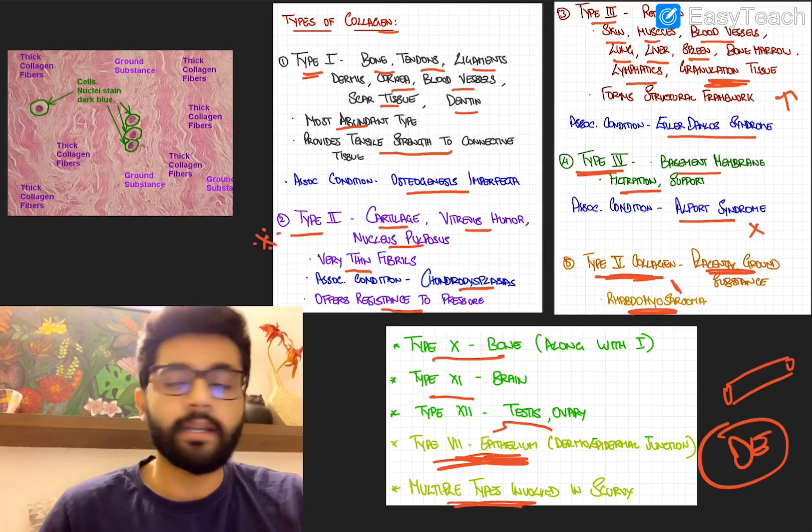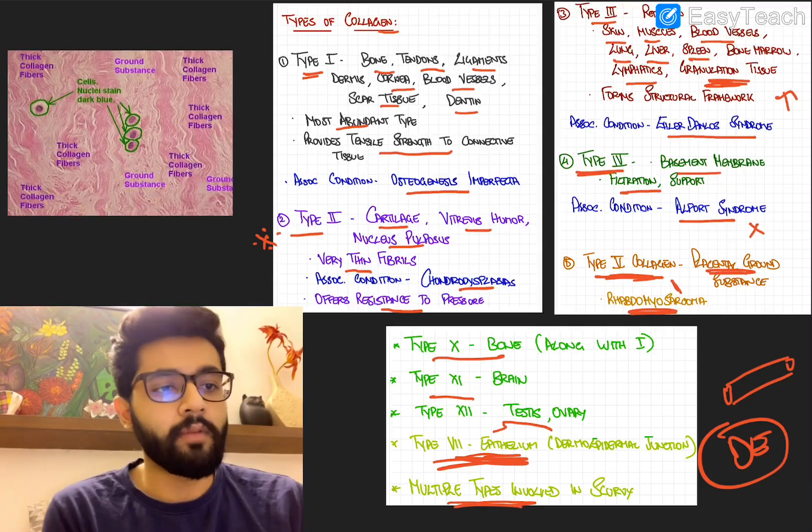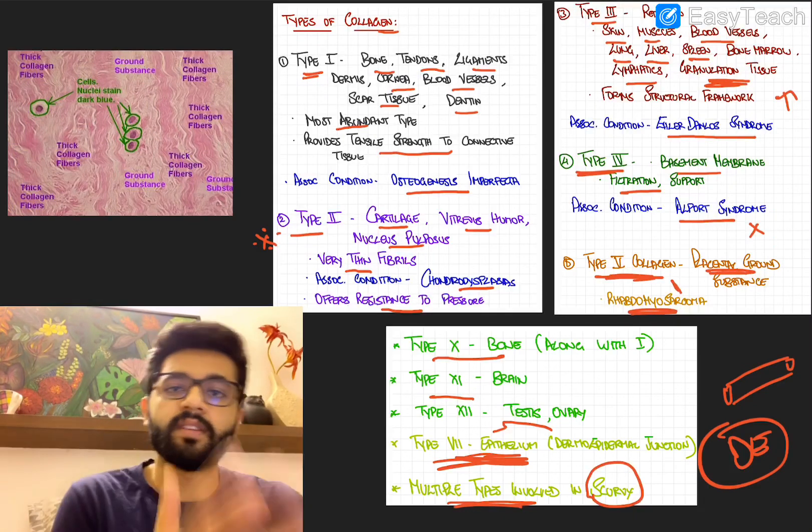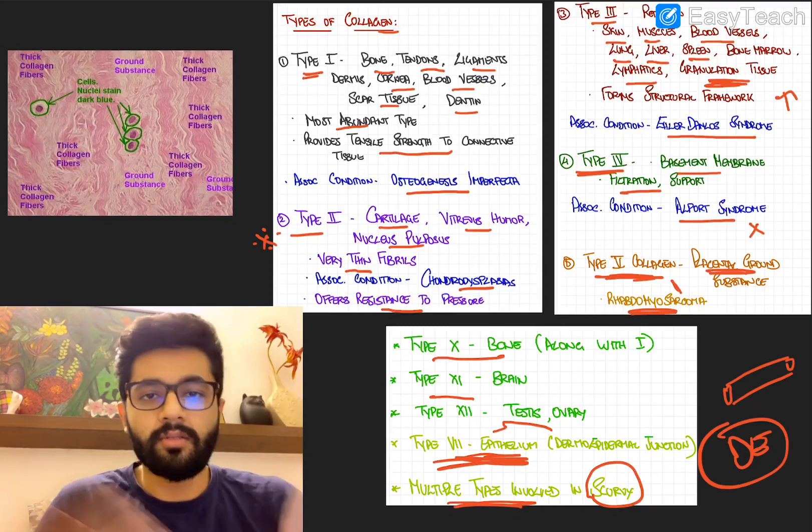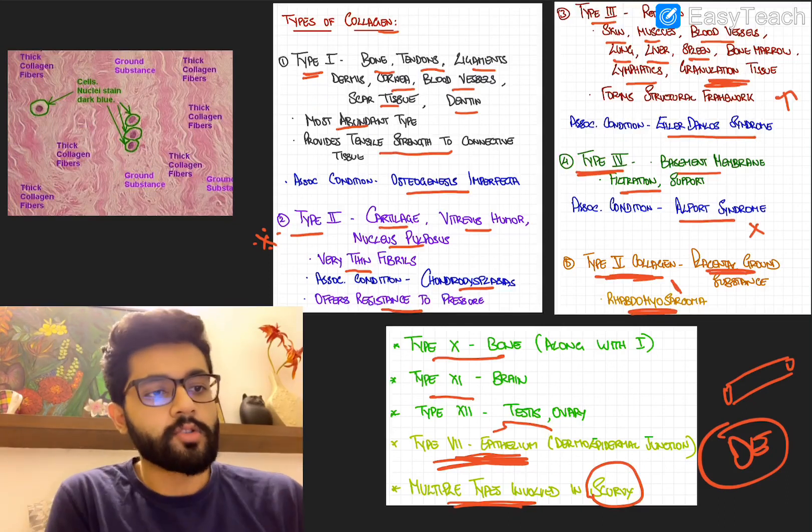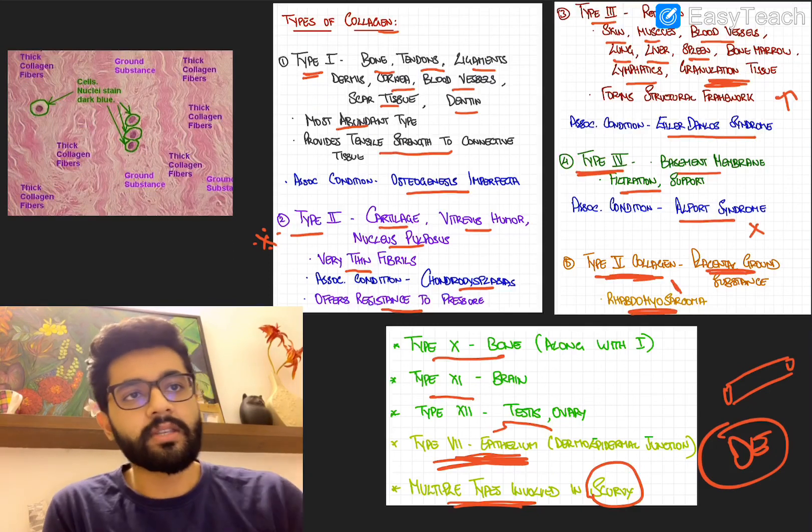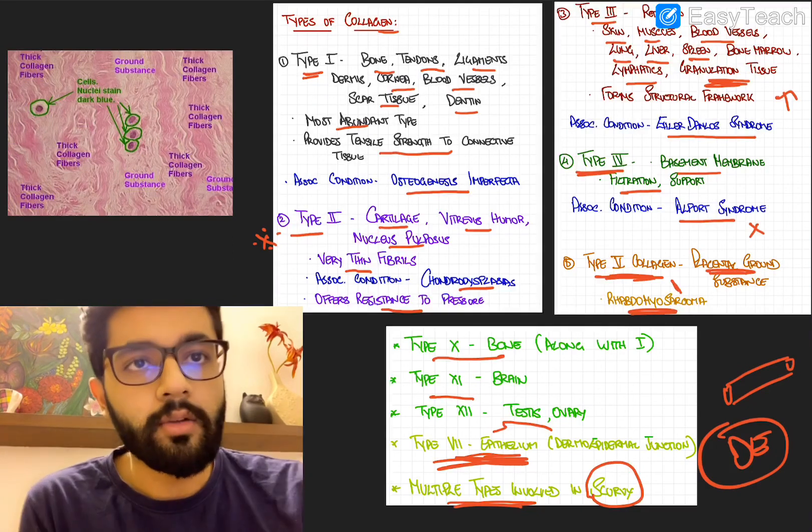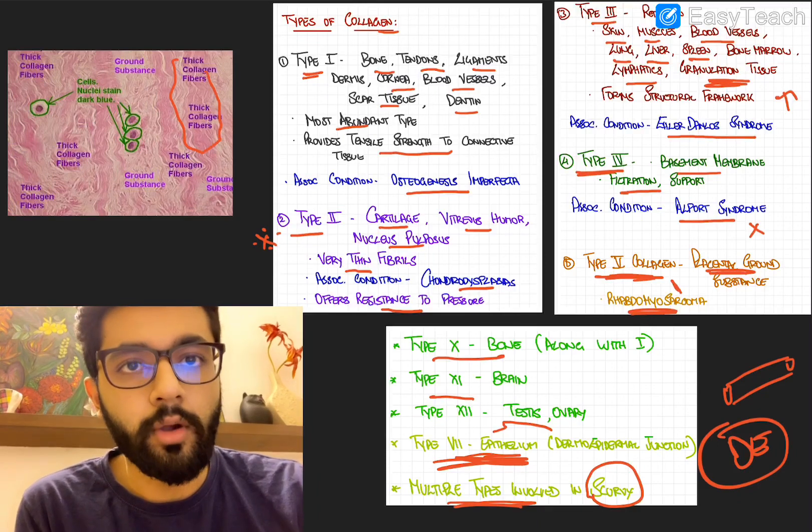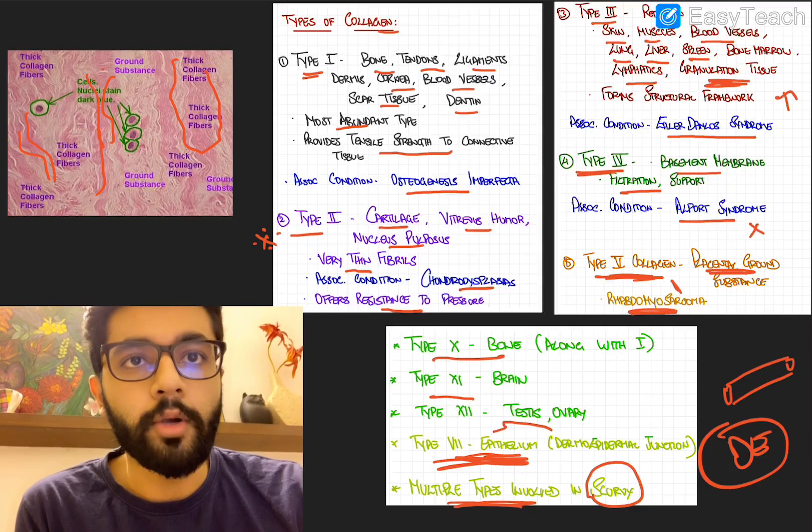If multiple types of collagen are involved, you should always suspect scurvy. So scurvy is vitamin C deficiency and vitamin C is required for formation of collagen due to hydroxylation reactions. So if there's vitamin C deficiency, all or many types of collagen can be affected. So here you can have a histopath examination showing collagen fibers. So you should definitely be able to identify this.